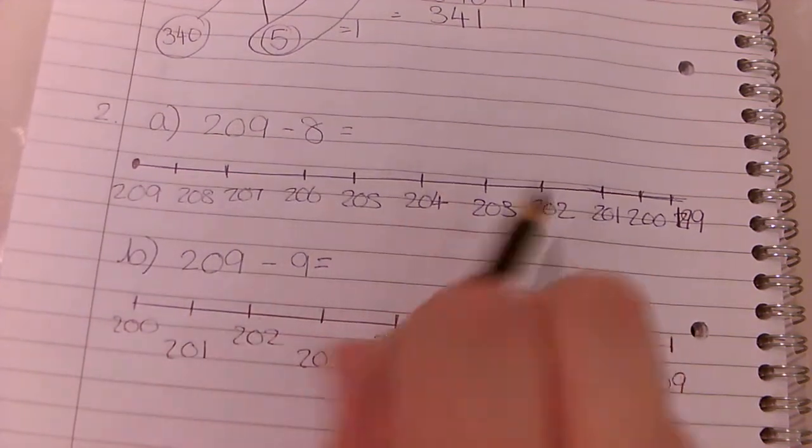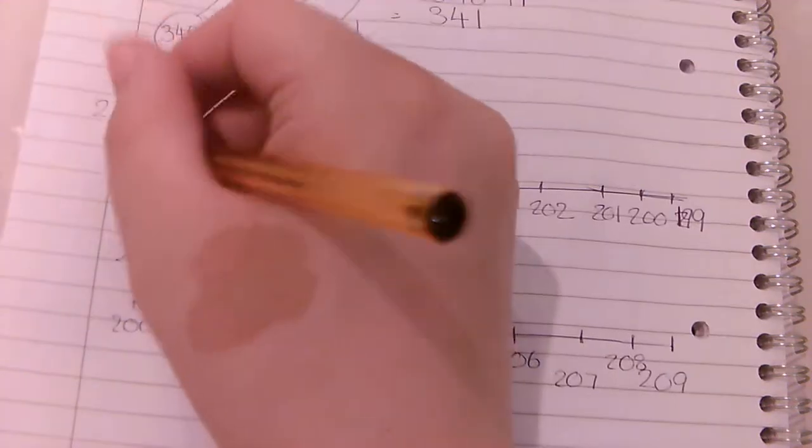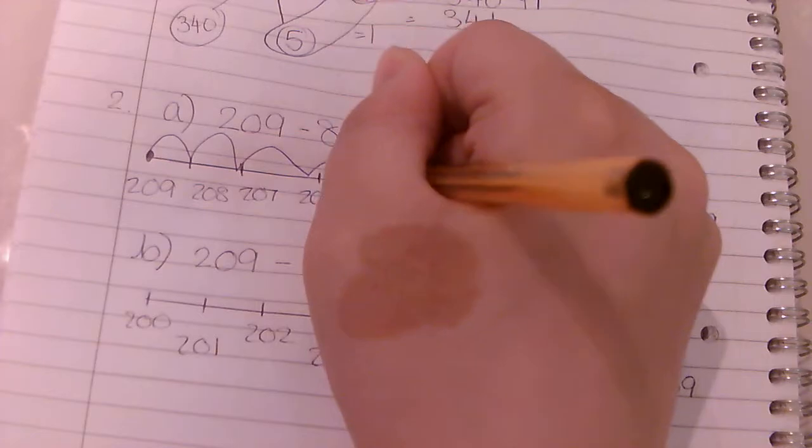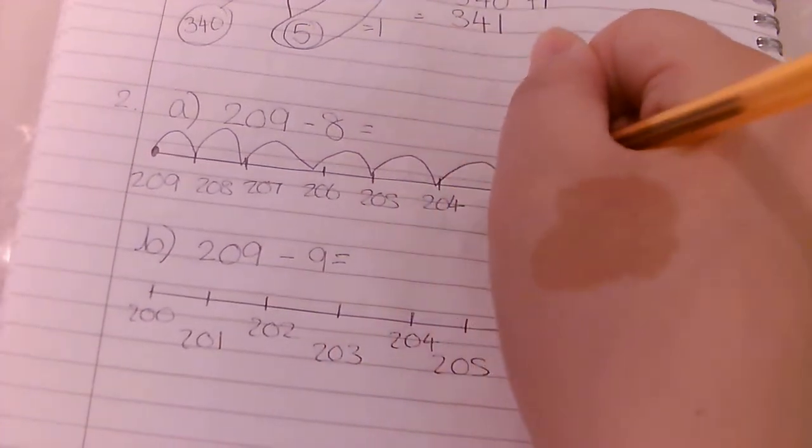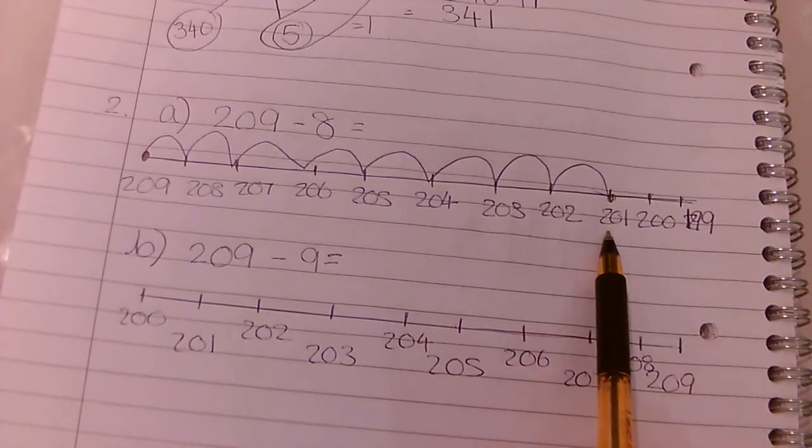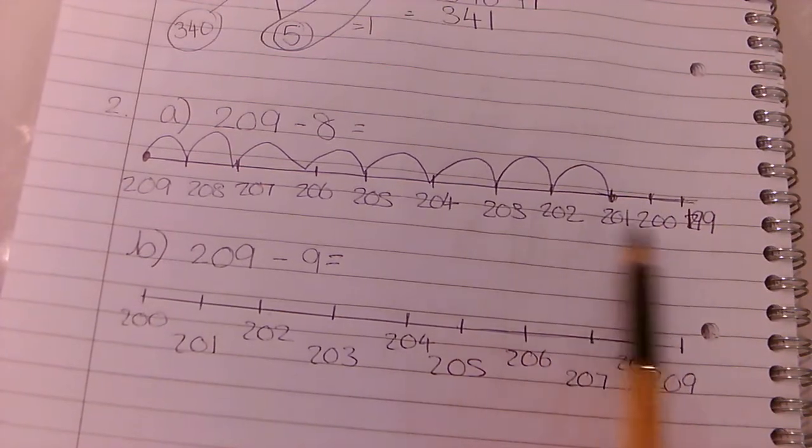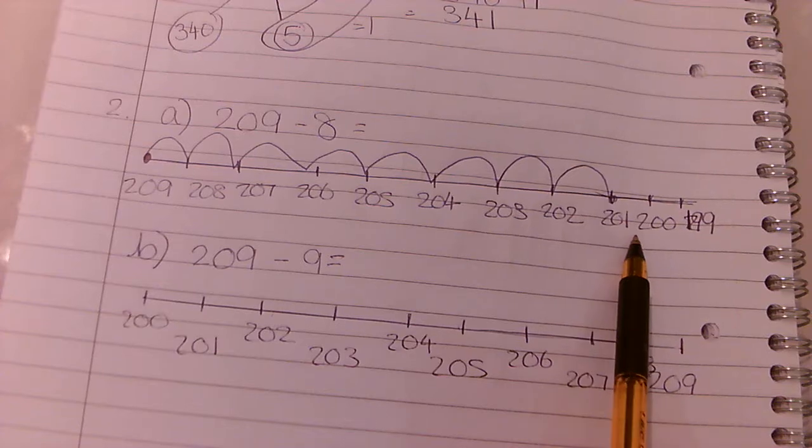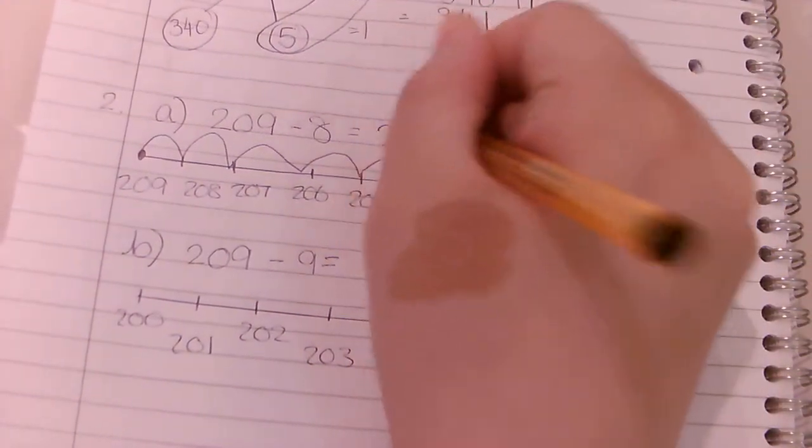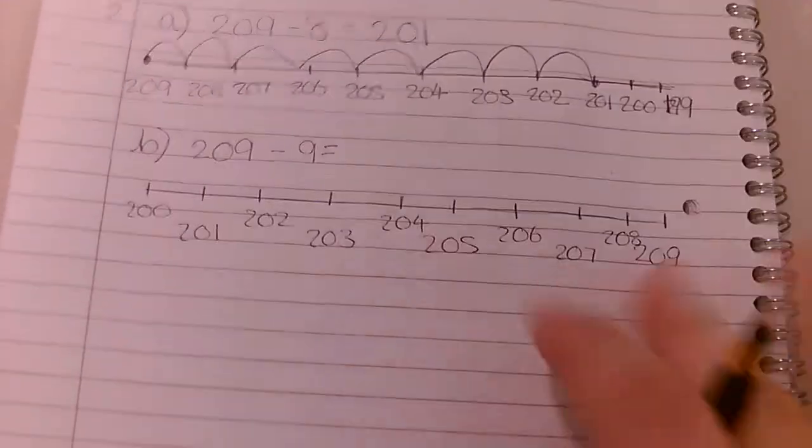So we need to make sure that we're doing our leaps in the smaller direction. We're going to do 8 leaps. Let's count 8 times: one, two, three, four, five, six, seven, eight. And we end up here. Can you see what this number is? It's a little bit tricky because the line's going through it. 201. So 209 take away 8 is 201.